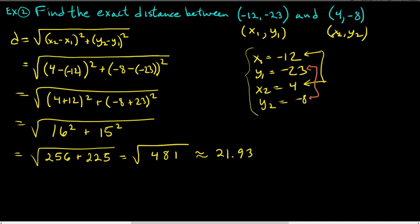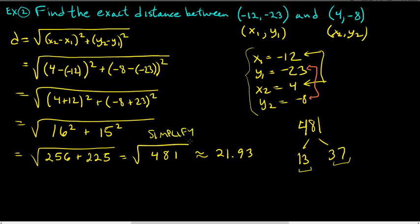Can we simplify 481, or is it a prime number? Let's check: 13 works — 13 times 37. But these are both prime numbers, so there are no perfect squares here. You cannot simplify this further. When you can simplify, you should — but here the square root of 481 is as simple as it gets.